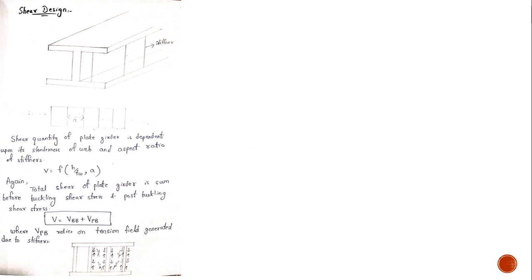We have already performed the flexure design of the plate girder with two cases: one where the web was slender and another where the flange was slender or non-compact. The shear capacity of a plate girder depends upon two factors: first, the slenderness ratio of the web — h by tw — and second, the aspect ratio, which is the distance between two stiffeners. Stiffeners are provided to prevent lateral torsional buckling (LTB).